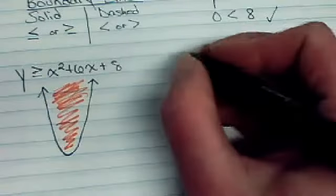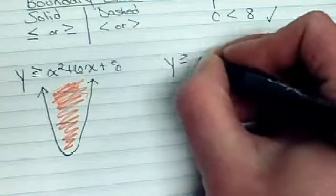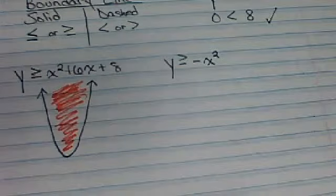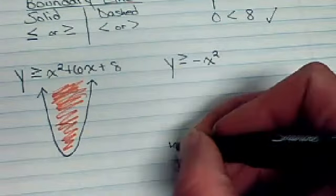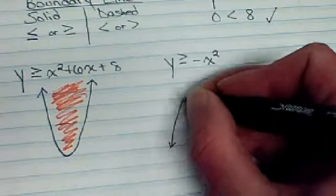Now that's nice when it's opening up, but what about one that opens down? So let's use just a regular negative x squared, just our basic parent function flipped over. That graph would be one opening down. Because it's or equal to, it's going to be a solid line.